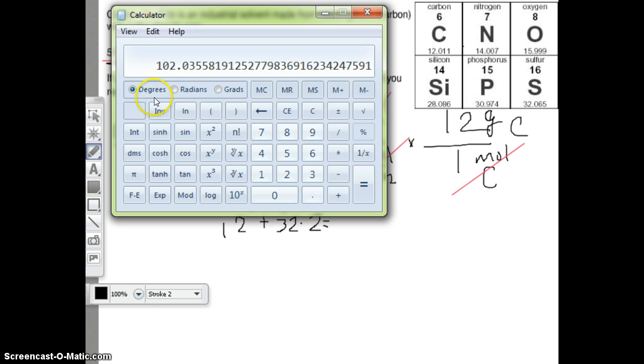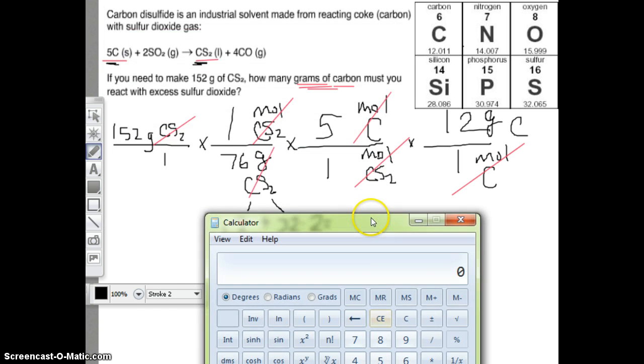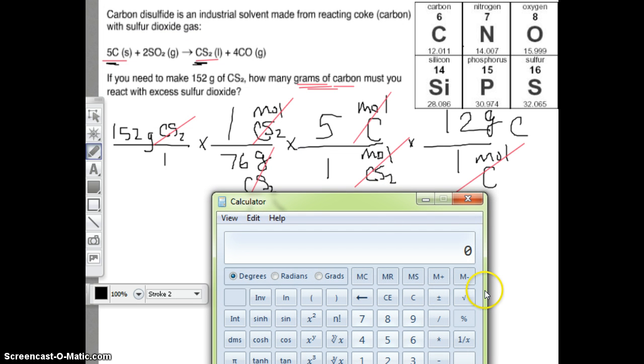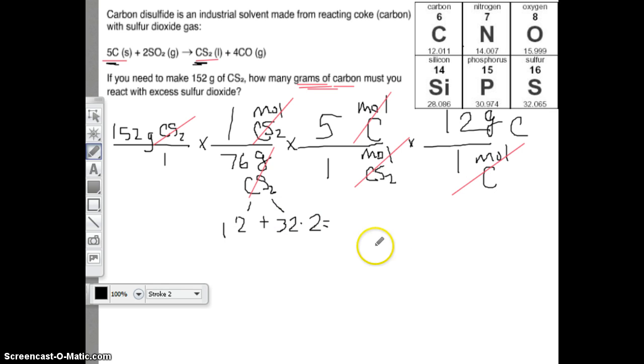Get out your calculator. I got 152 times 1 times 5 times 12 divided by 76. My answer is 120 grams of carbon. So here's my final answer. Hit pause, make sure you got it all down.